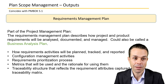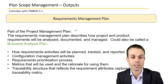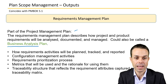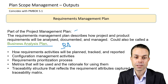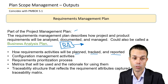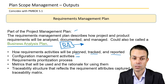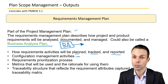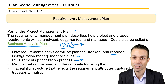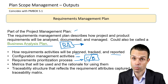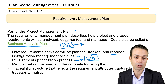The second output is the requirements management plan, which is part of the project management plan. It describes how project and product requirements will be analyzed, documented, and managed. It may also be called the business analysis plan given the rise of the BA role. It covers how requirements activities will be planned, tracked, and reported; configuration management activities including what parts of scope will be baselined and how changes are made; and requirements prioritization processes.